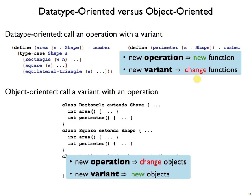This trade-off is the fundamental difference between data-type oriented programming and object-oriented programming. And so it's one of the things we want to look at, as now we start looking at objects.